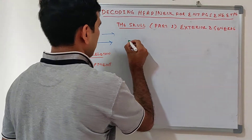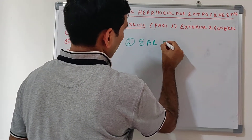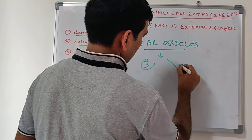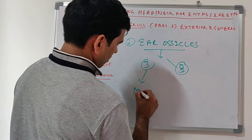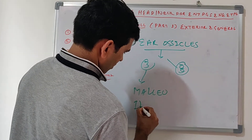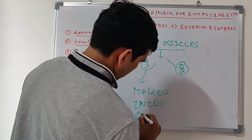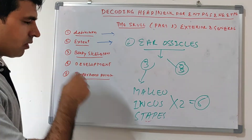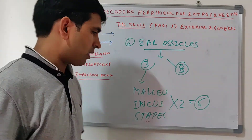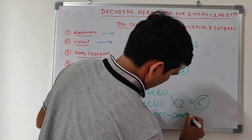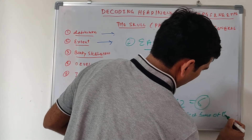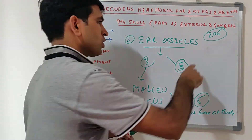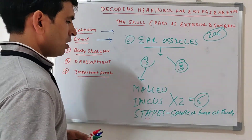Now, ear ossicles - three on each side: malleus, incus, and stapes - making six bones total. The malleus, incus, and stapes are ear ossicles found in the middle ear. The stapes is the smallest bone of the body. The human body has 206 total bones, and the smallest is the stapes bone.